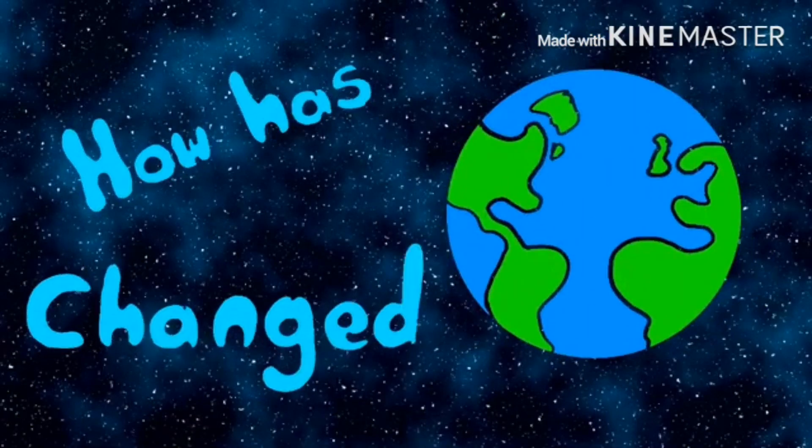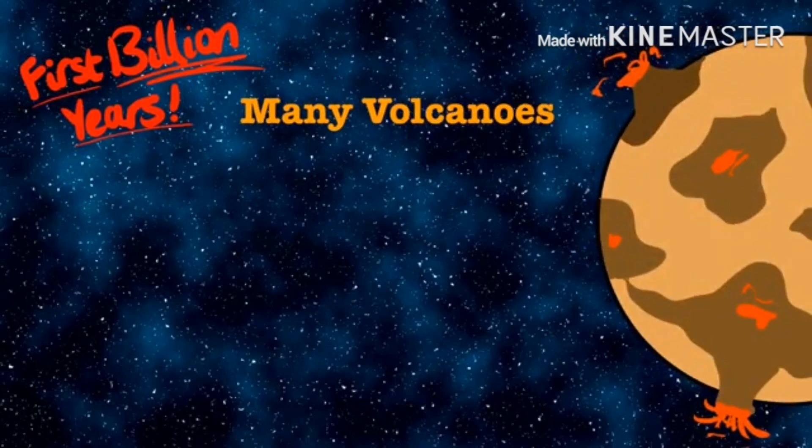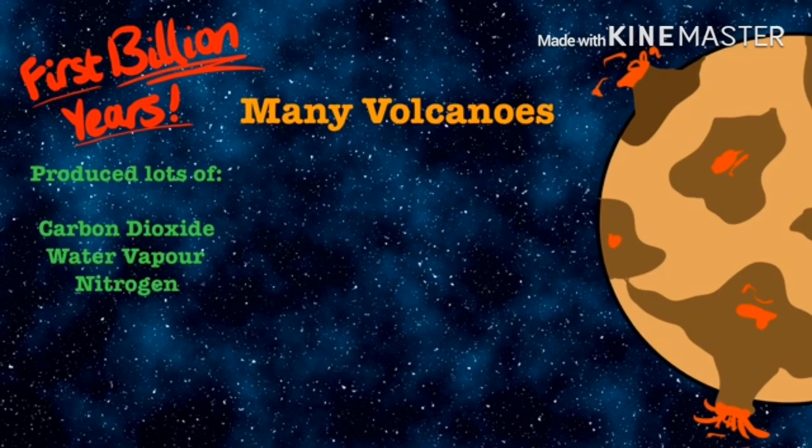How has the Earth changed? In the first billion years, the Earth was very dry and had lots of volcanoes which produced lots of carbon dioxide, water vapour, and nitrogen. There were also some amounts of methane and ammonia.